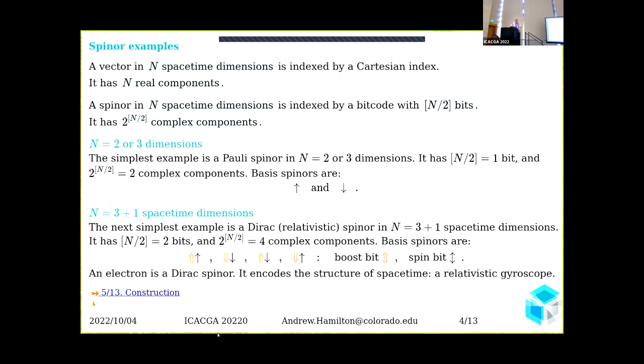Spinors also have a beautiful structure: they're indexed by a bit code with N/2 bits and have 2^(N/2) complex dimensions. For example, a Pauli spinor, which is the spinor part of the geometric algebra in two or three dimensions, has one bit, and the bits can be either up or down. The algebra of outer products of Pauli spinors yields the geometric algebra in two or three dimensions.